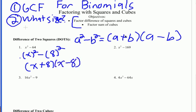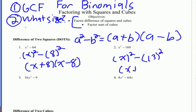Number two — is there a GCF? There is not. And we can see once again we have a difference of squares, because you have x squared minus 13 squared. So you get (x plus 13) times (x minus 13).